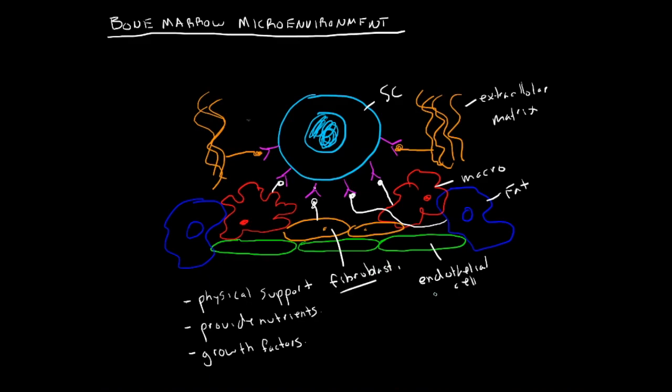And we'll see why all of these different cells and their ability to provide nutrients and growth factors and be physical support for these stem cells are really important for the differentiation into the different cells of our immune system as we move forward in other videos.